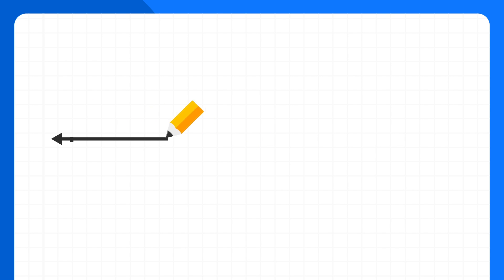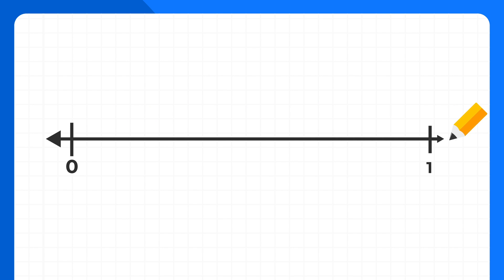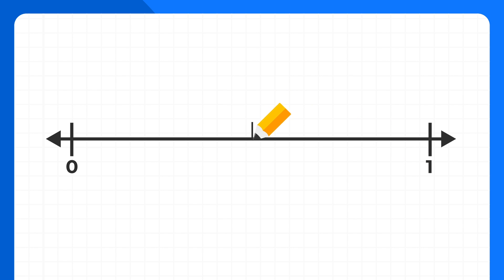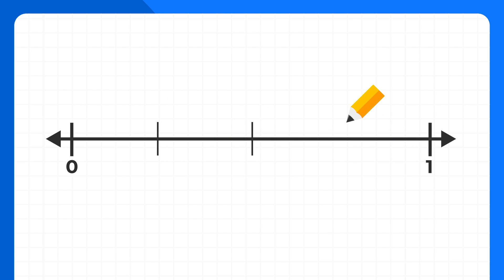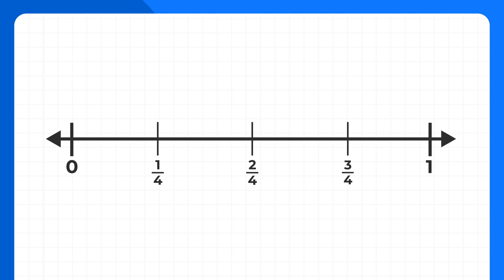On a number line, it's easy to spot equivalent fractions. Let's start by drawing a number line showing fourths. We'll start by splitting the number line in half, and then split each half in half again. So now each of these dashes is showing one fourth.